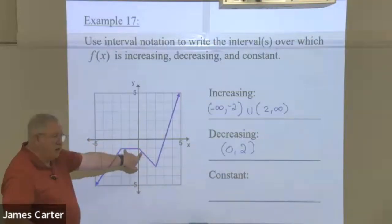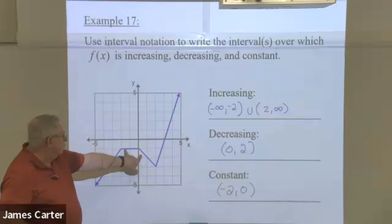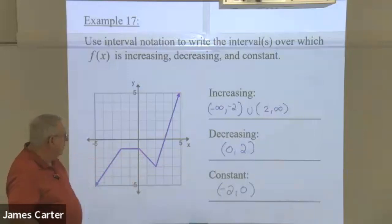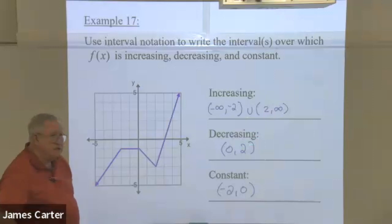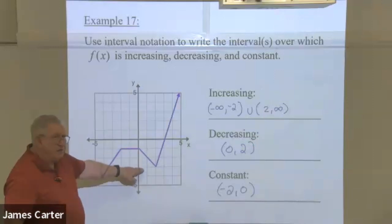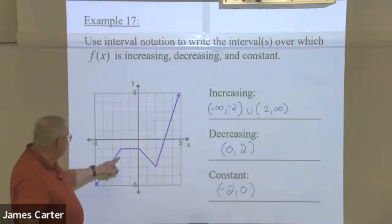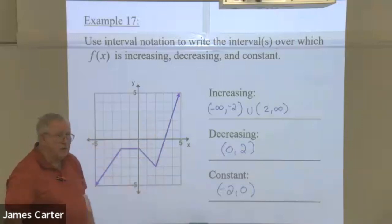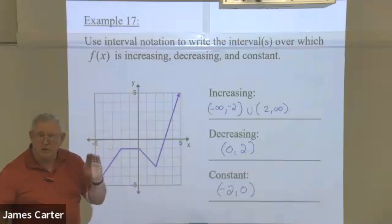Where is it constant? Between negative two and zero. Someone might ask why there are parentheses instead of brackets on these — it looks like the endpoints might be included. It's because these are turning points — change of direction points.